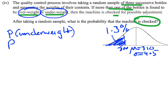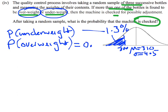Now we need to look at what is the probability of a bottle being overweight. If we go back to the previous question, they said the probability of it being overweight was 0.05. So that's talking about the top tail of the distribution being overweight, and that tail is 0.05, or 1 in 20.